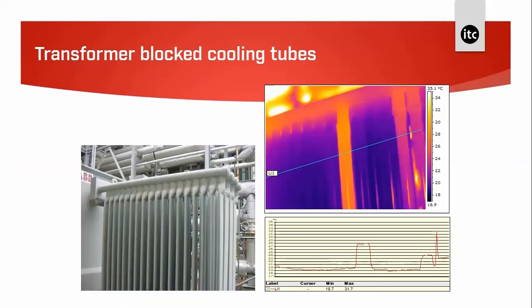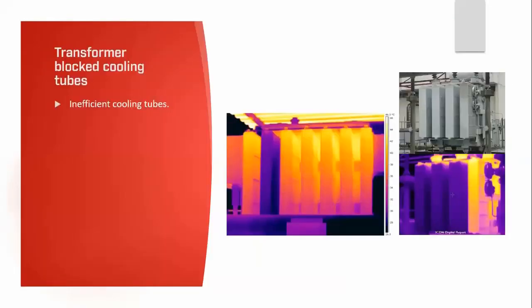Looking at cooling in transformers: most of the cooling tubes in this image are not working. I've put a profile line tool in the software to show the comparison between working and non-working cooling tubes — a great visual, a qualitative approach. In another image, the cooler section on the left reveals a problem with transformer cooling — on further investigation, the valve at the top of that compartment was blocked and unable to do its job.